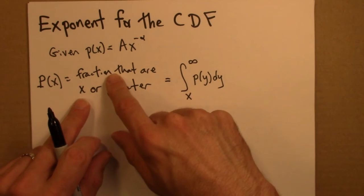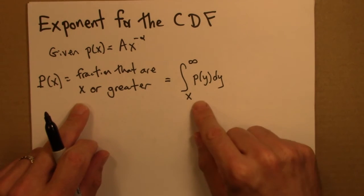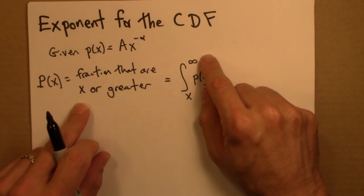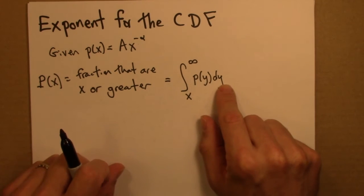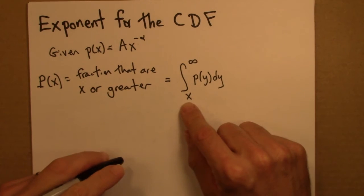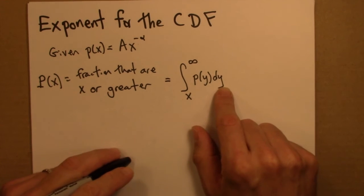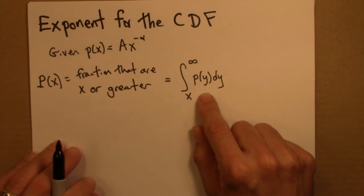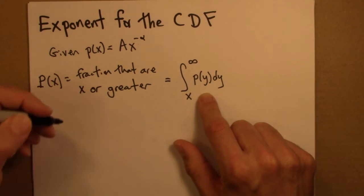The fraction of our values that are x or greater, we integrate from x all the way up to infinity. We're integrating the density function. And y here is a dummy variable. I can't use x because I'm using x here. So what we need to do is evaluate this integral.